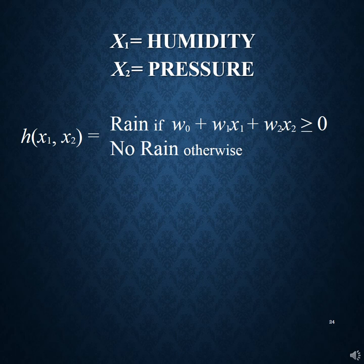Our hypothesis function is going to take as input x1 and x2 — humidity and pressure in this case. You can imagine if we didn't just have two inputs but three, four, five, or even more, we could have this hypothesis function take all of those as input as well. The question is: what does this hypothesis function do? It really just needs to measure whether this data point is on one side of the boundary or the other side. The boundary is generally going to be a linear combination of these input variables.